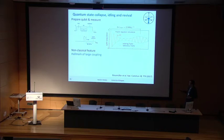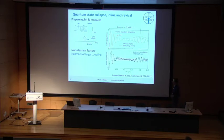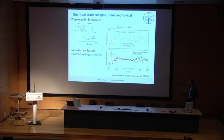In the lab frame we have fast Rabi oscillations with an envelope shown by the blue curve, which displays state collapse, an intermediate idling regime, and then a later revival. The simulations already include dissipation and decoherence, and the experimental data matches the numerical simulations quite well.